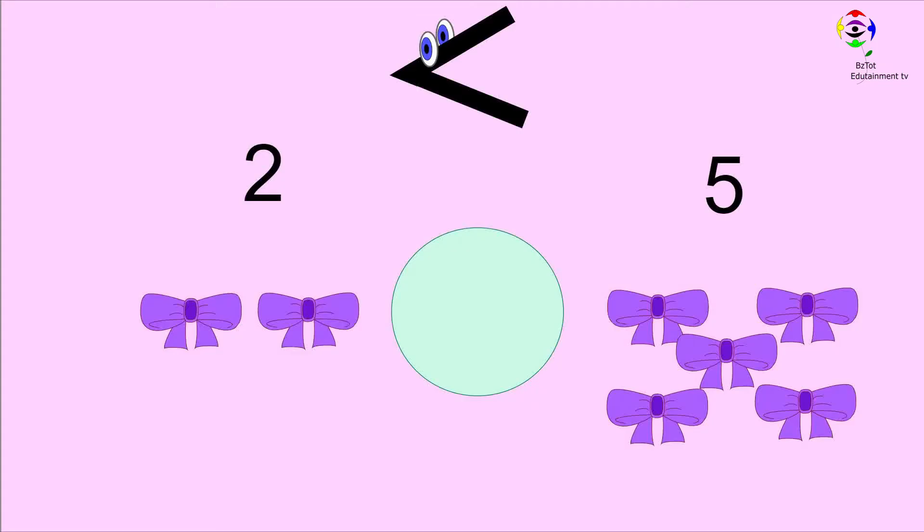Let's try this one. We have two bows and five bows. Two is less than five. Can you see where Mr. Sign is facing? You can see Mr. Sign is facing the bigger number.